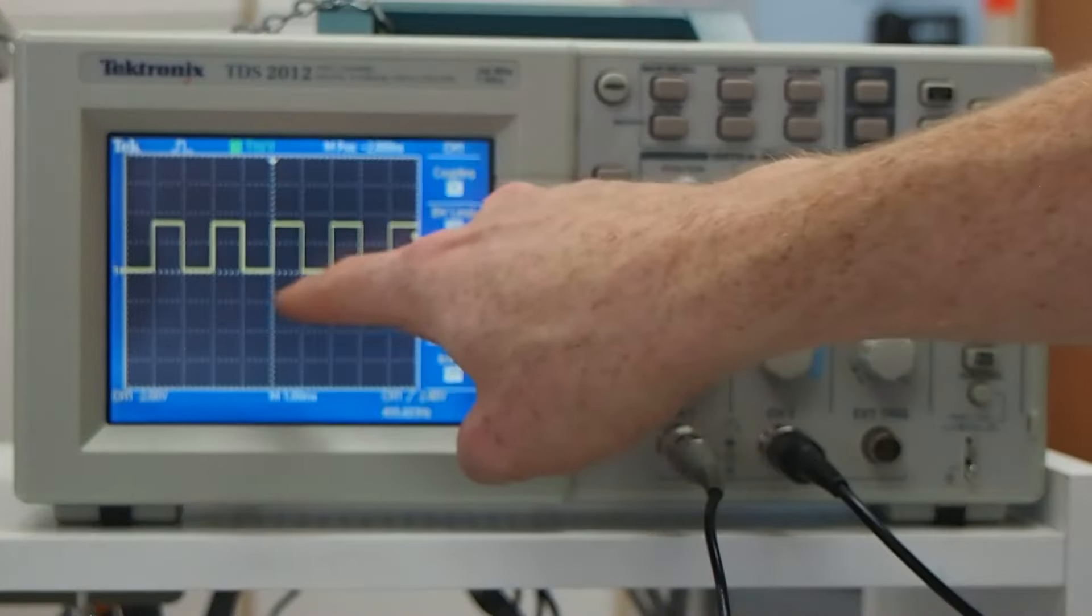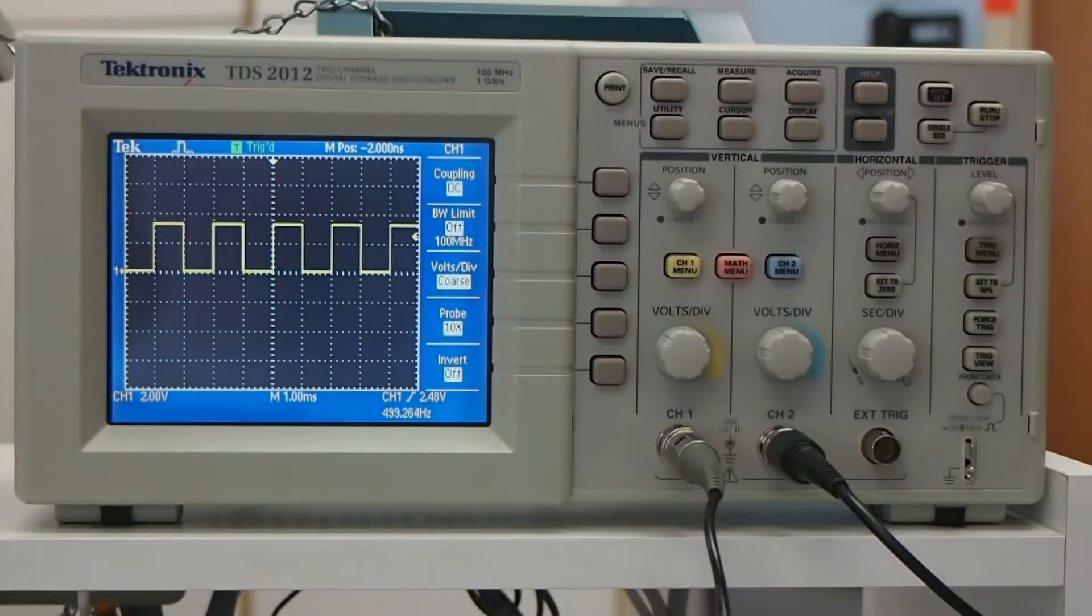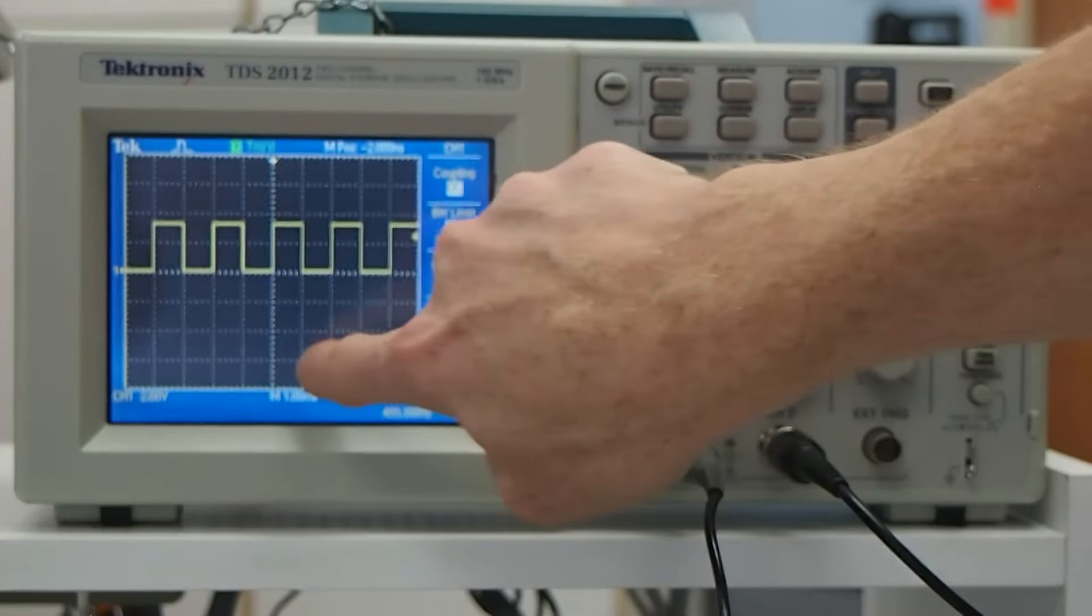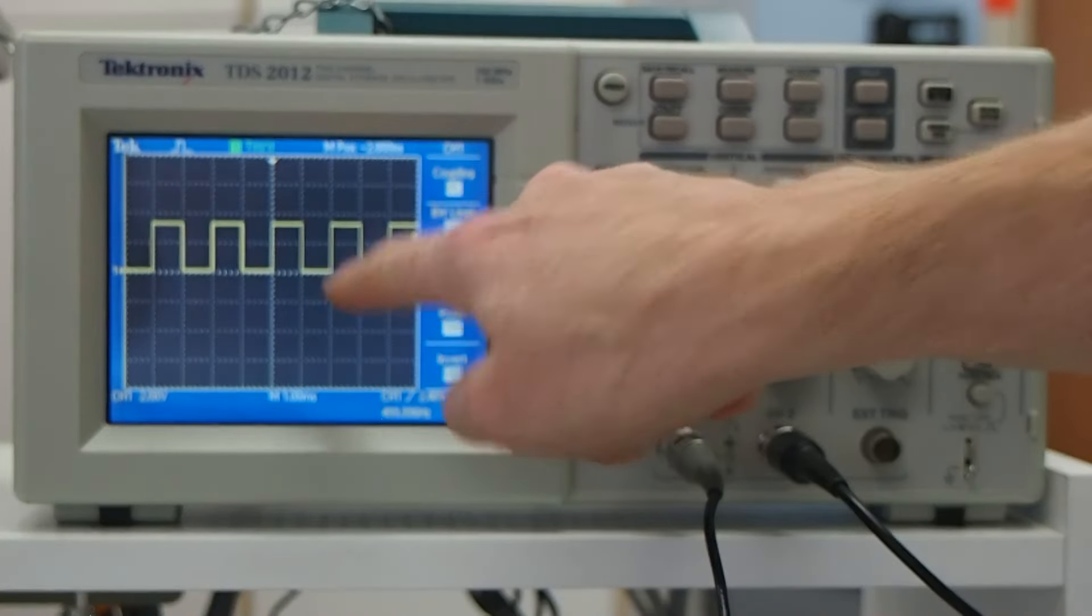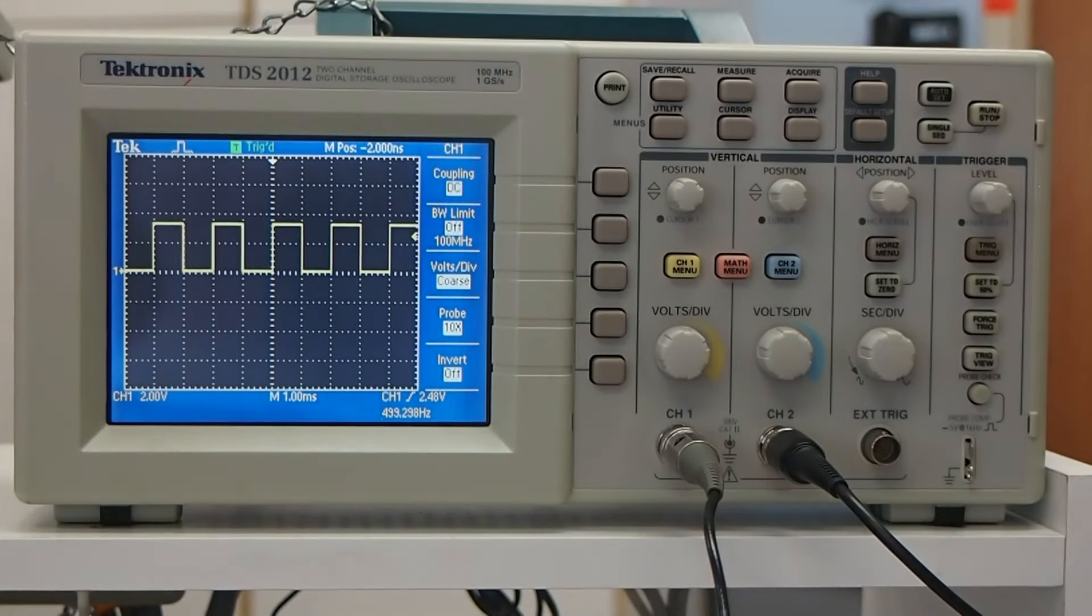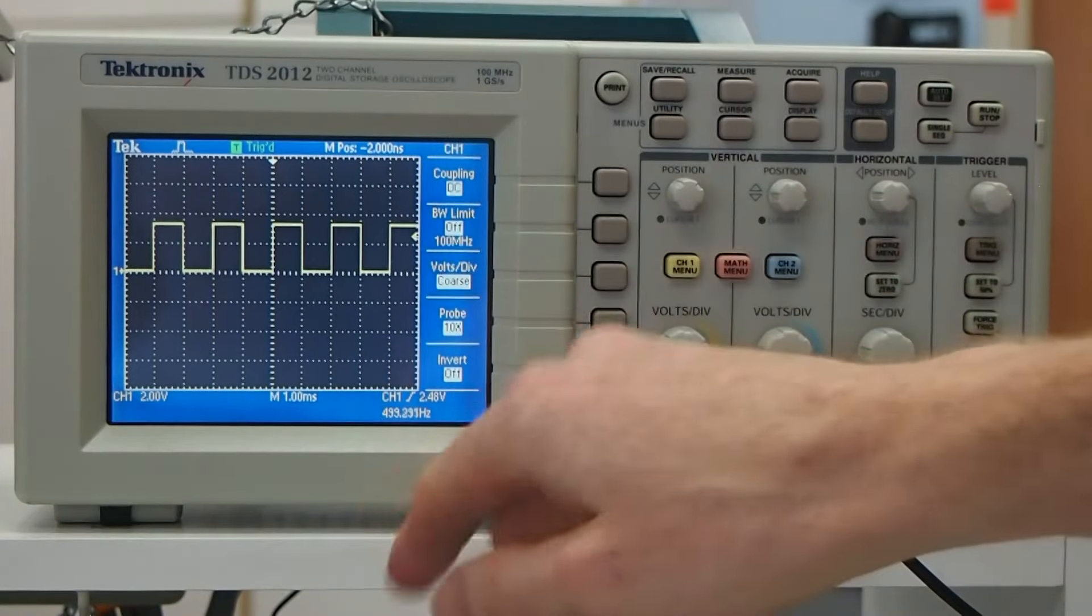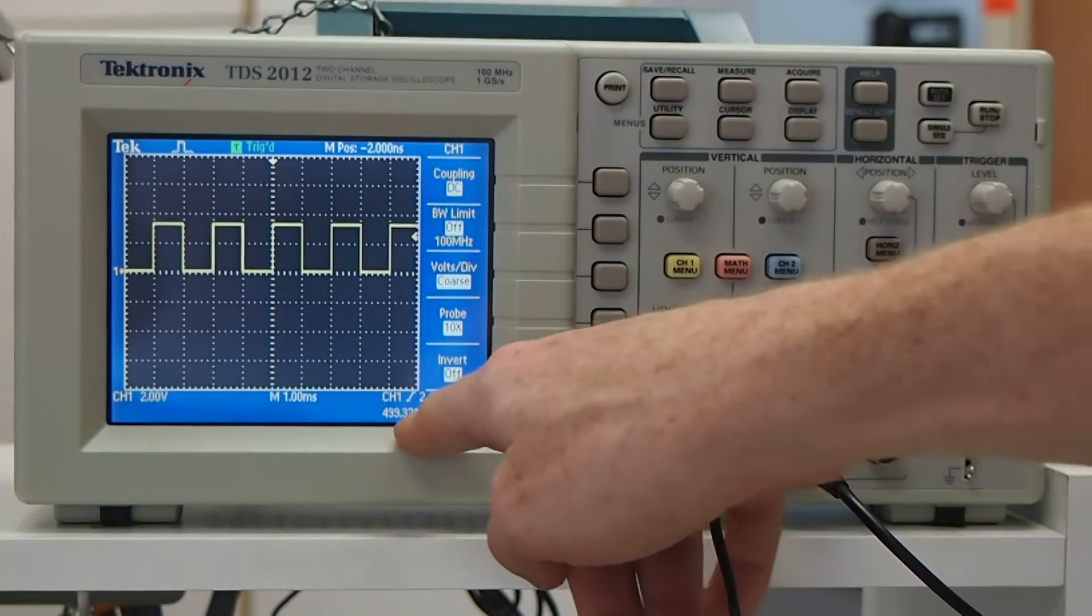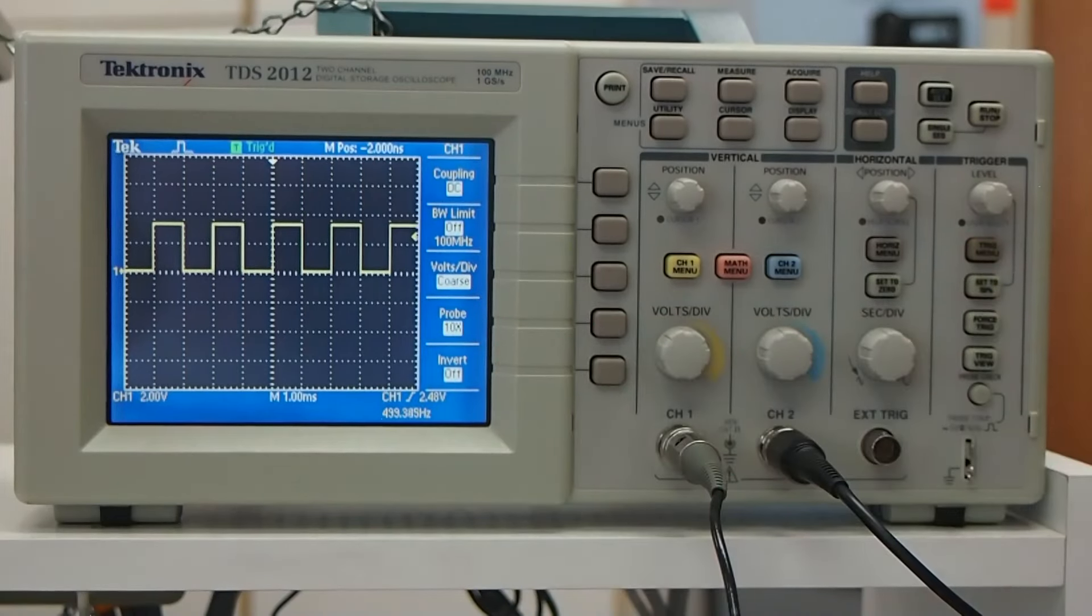So with one millisecond per division, the signal looks like a square wave where it's half up and half down. And it's up for one millisecond and down for one millisecond. So the entire period of this signal here is going to be two milliseconds, which would be a frequency of 500 hertz. And sometimes if the oscilloscope is able to lock onto a signal, it will actually just tell you what the frequency is, which is pretty helpful. It says 499.3-something-ish hertz. So just about 500 hertz like we expected.